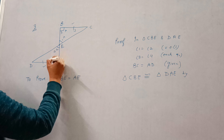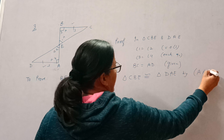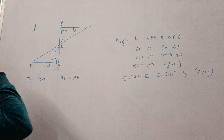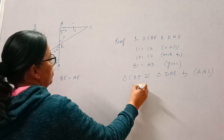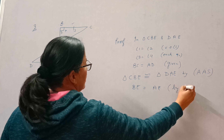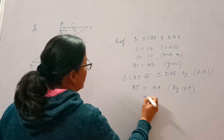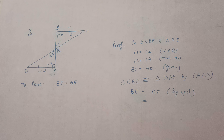Therefore, triangle CBE is congruent to triangle DAE by angle-angle-side (AAS). Since the two triangles are congruent, their corresponding sides are also equal. So BE is equal to AE by CPCT — corresponding parts of congruent triangles. Hence proved.